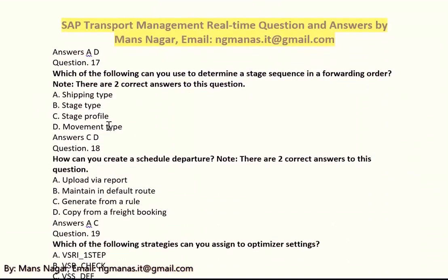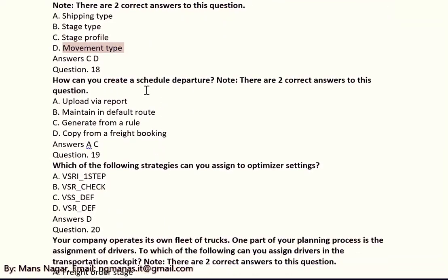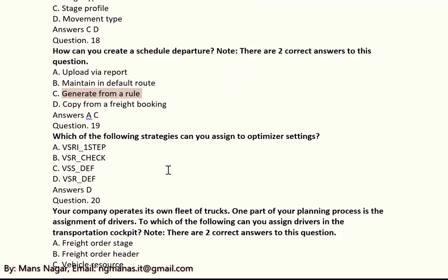Which of the following can you use to determine a stage sequence in the forwarding order? There are two correct answers: C and D — C is stage profile, D means movement type. How can you create a scheduled departure? There are two correct answers: A and C — upload via report or generate from a rule.